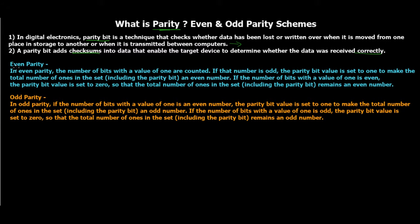There are two different schemes: even parity and odd parity. In even parity, the number of bits with the value of one are counted. If that number is odd, the parity bit value is set to one to make the total number of ones in the set an even number. If the number of ones is already even, the parity bit value is set to zero so the total number of ones remains even.